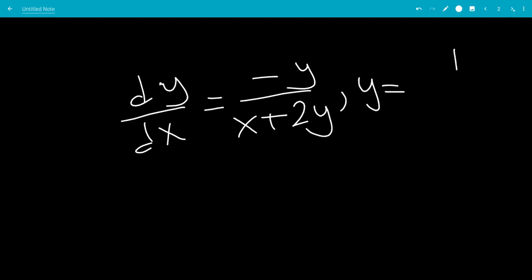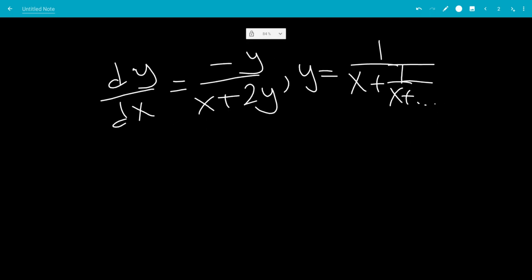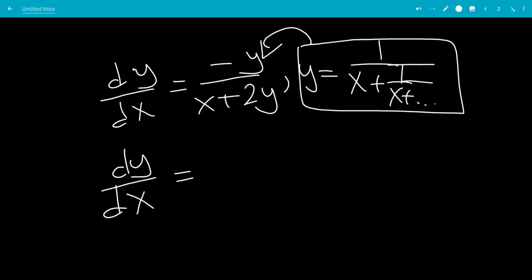Where y is this infinite continued fraction. So now we can plug this in into y to get a dy dx with respect to x. So now we're going to have dy dx equals minus y, which is minus 1 over x plus 1 over x, and so on.